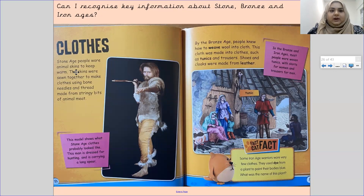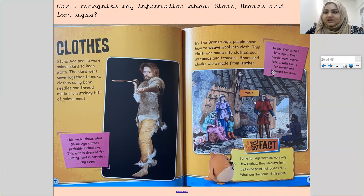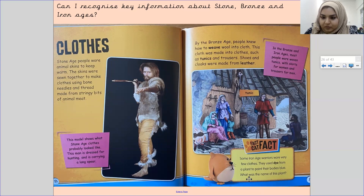Stone Age people wore animal skins to keep warm. The skins were sewn together to make clothes using bone needles and thread made from stringy bits of animal meat. By the Bronze Age, people knew how to weave wool into cloth, made into clothes such as tunics and trousers, while shoes and cloaks were made from leather. In the Bronze and Iron Ages, most people wore woven tunics with skirts for women and trousers for men. Some Iron Age warriors wore very few clothes and used dye from a plant to paint their bodies blue.